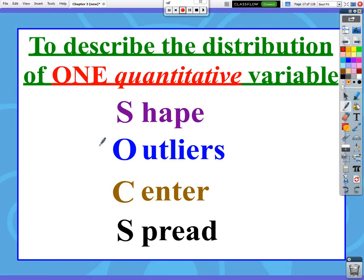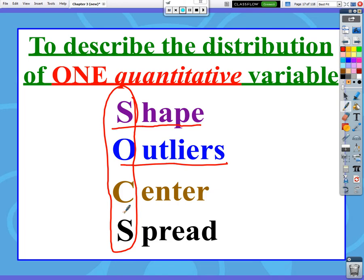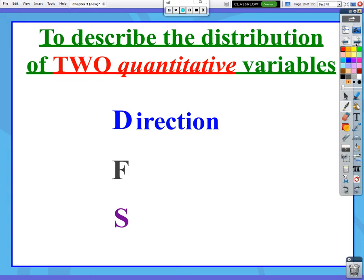Now back in Chapter 1, when we were asked to describe the distribution of just one quantitative variable, we used the acronym SOCKS to be able to describe the variable shape, outliers, center, and spread. But now that we have two quantitative variables in our scatter plots, we can't really talk about the SOCKS of each because we're graphing them together in one graph. So now we get a new acronym, which I refer to as DFS.